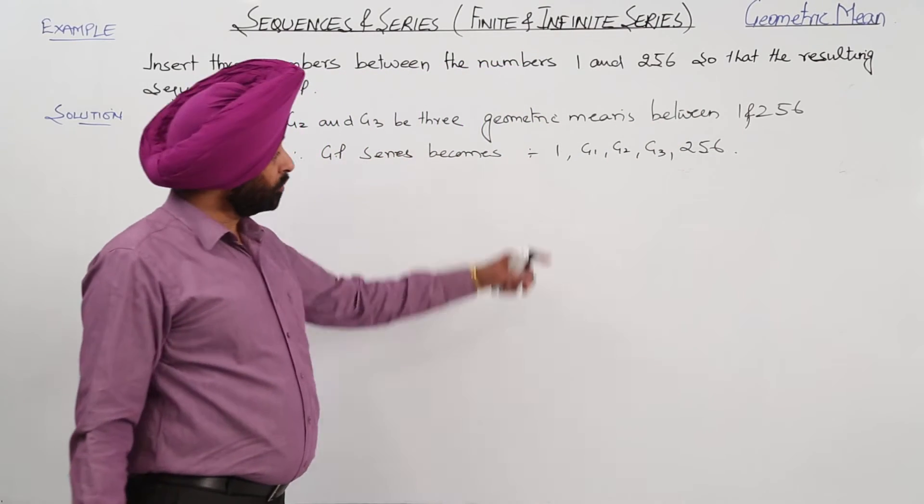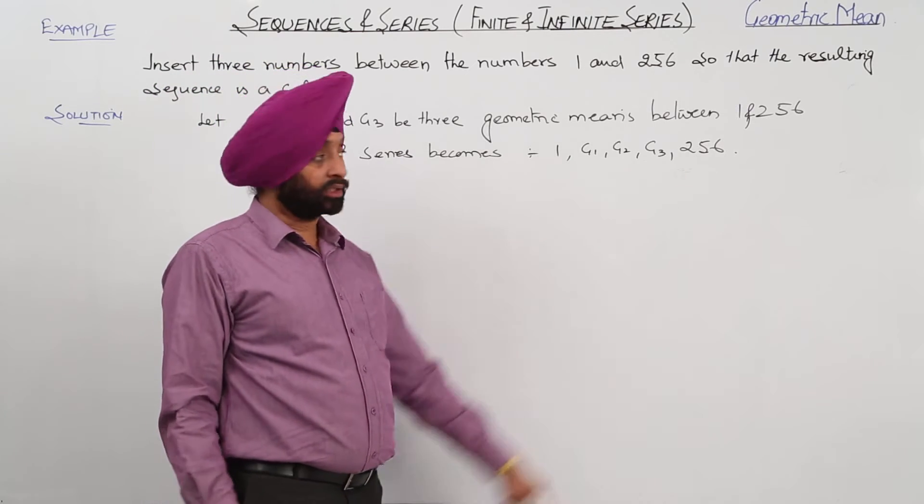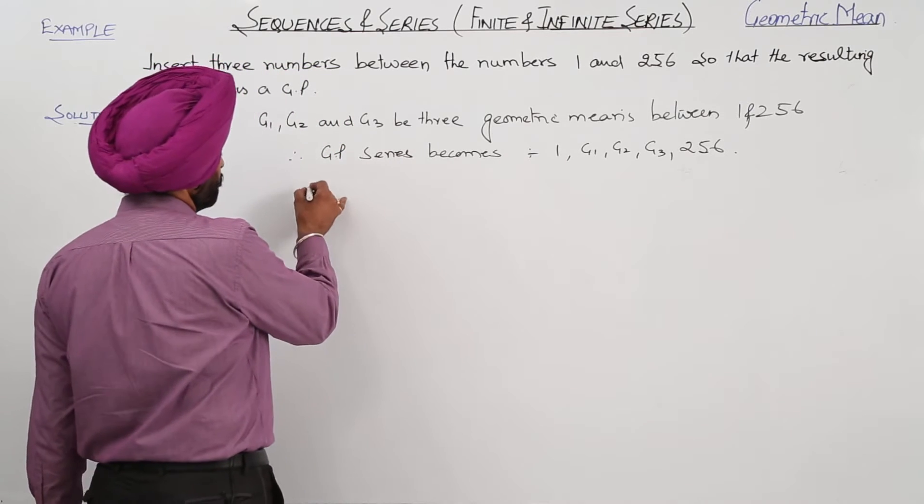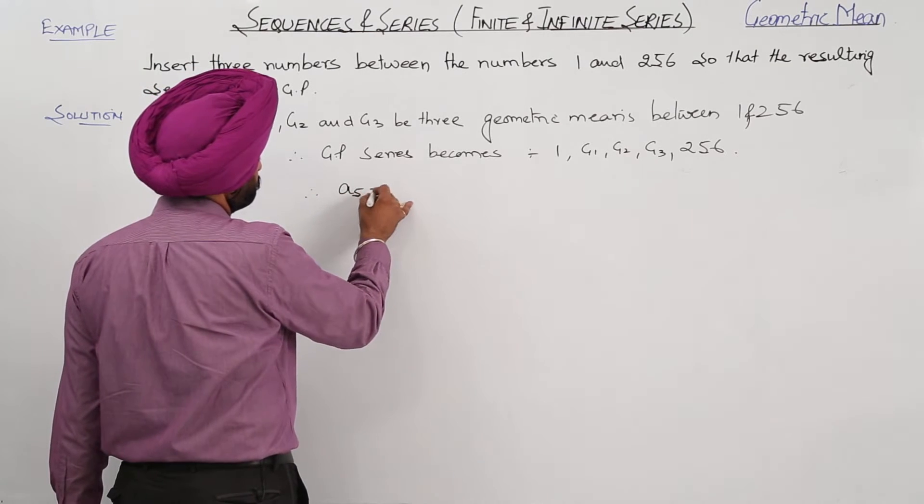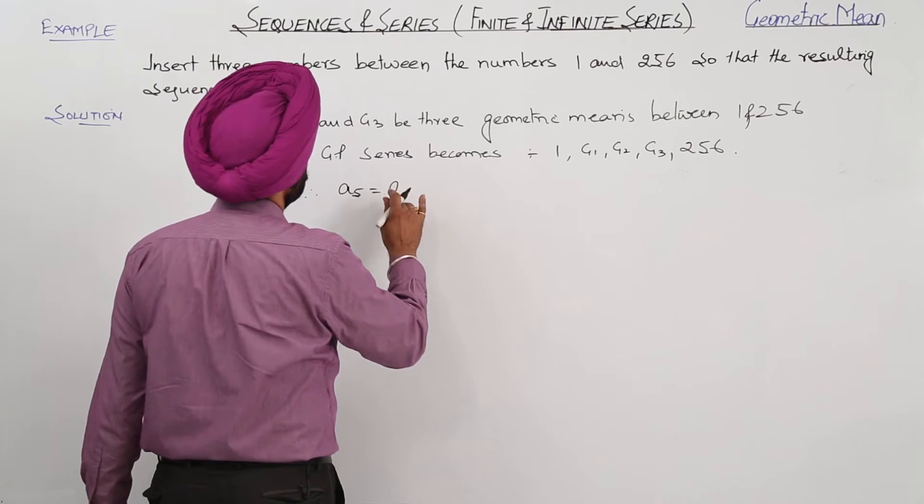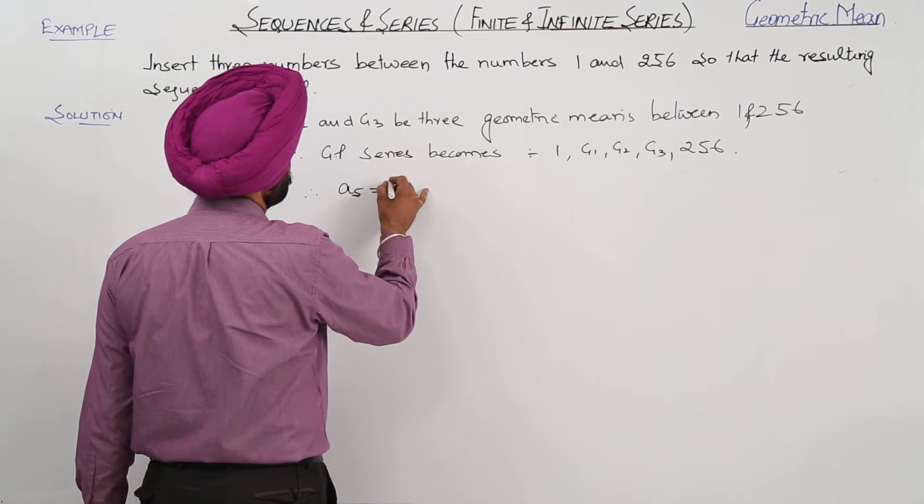Now total number of terms are how many? 5 terms are there. Now we can write it. Therefore, A5 is equal to 256.